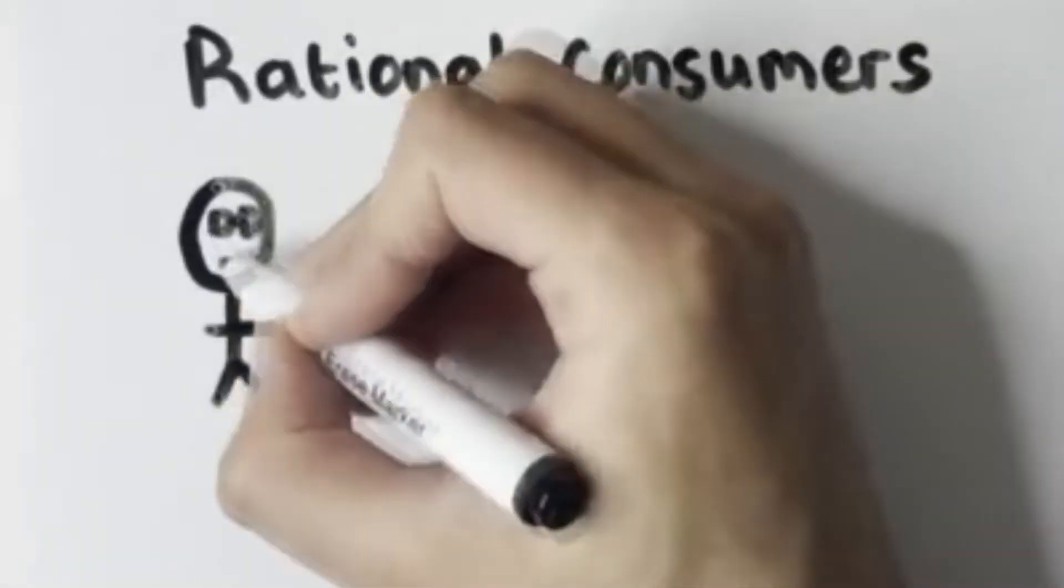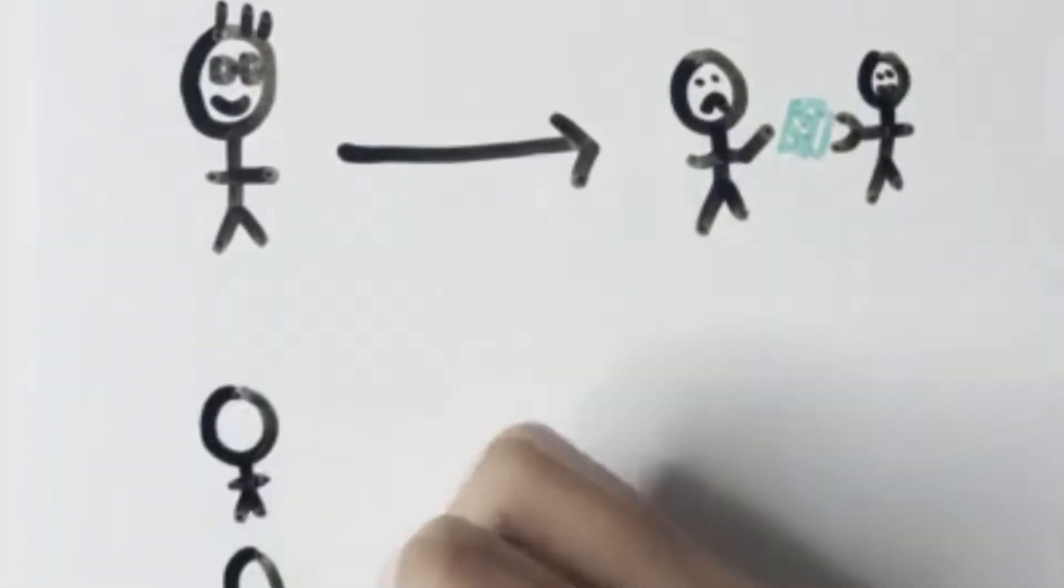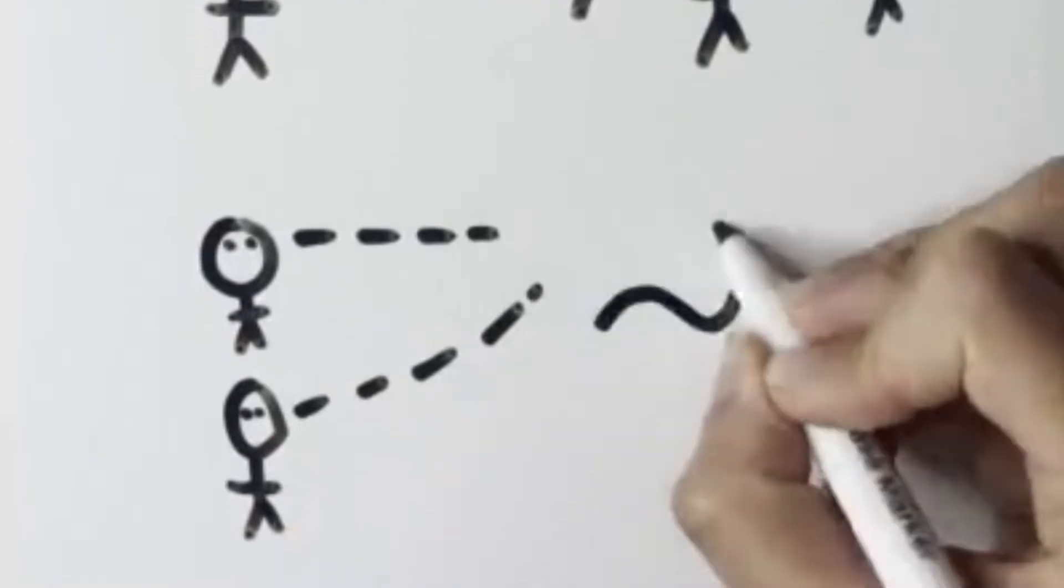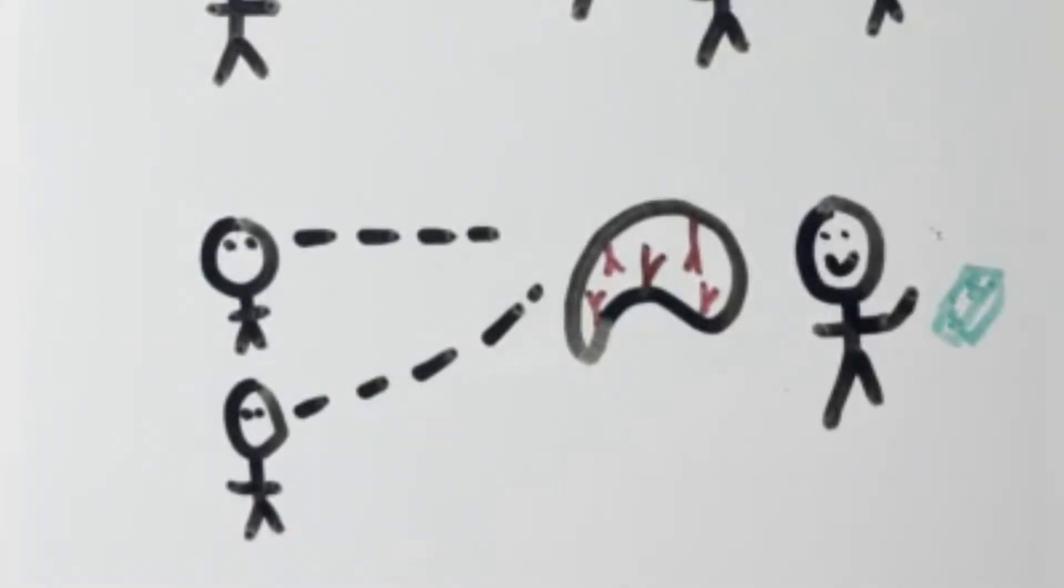We all like to think that we're rational consumers and that we can never be tricked into a bad deal. Unfortunately, businesses employ people who understand neuromarketing and how humans make buying decisions, and they have a lot of ways of making us think we're getting a good deal when we're actually not.